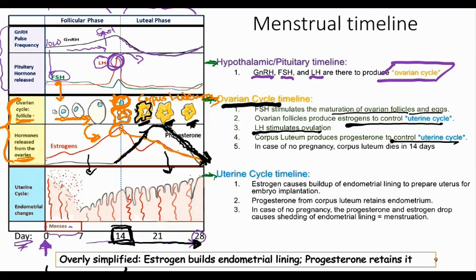That variability doesn't just differ from woman to woman — it can also vary for one woman from month to month. In the case of no pregnancy, the corpus luteum is going to die in 14 days. The ovarian cycle is there to mature the follicles, stimulate ovulation, and produce the corpus luteum, whose progesterone and estrogen control the uterine cycle.